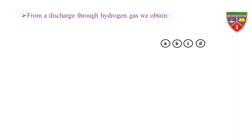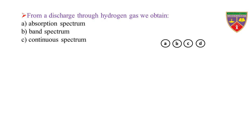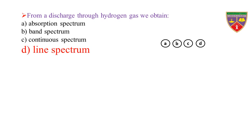From a discharge through hydrogen gas, we obtain: Option A, absorption spectrum; Option B, band spectrum; Option C, continuous spectrum; Option D, line spectrum. The key is line spectrum.